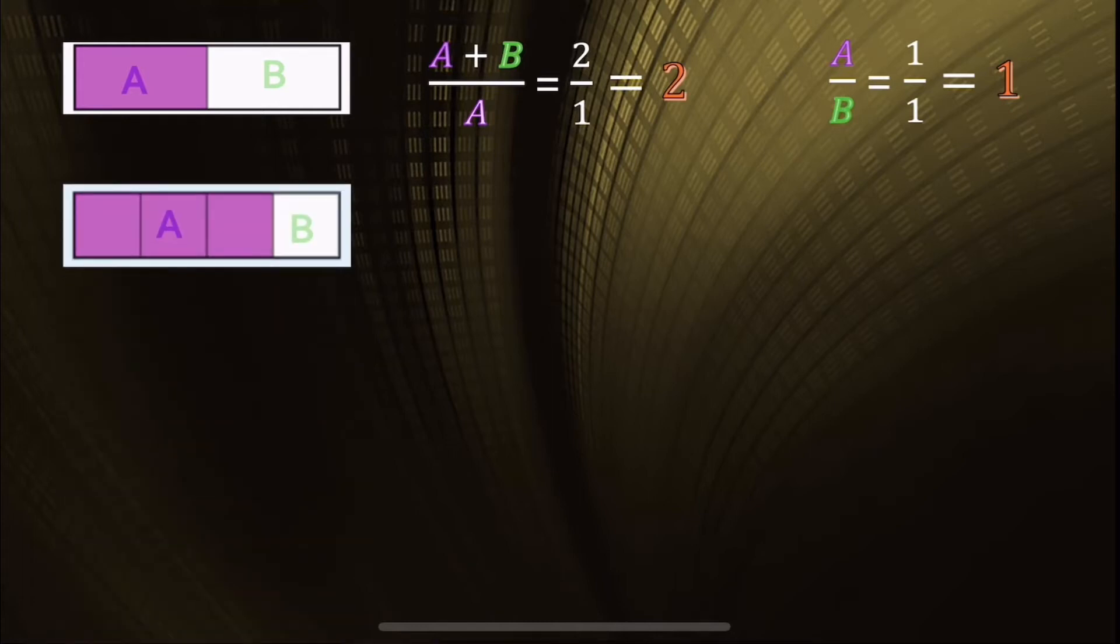Let's cut it 4 to 3. So the ratio of A plus B to A is 4 to 3, and the ratio of A to B is 3 to 1. And keep in mind that we want the two ratios to be equal to each other, so once again, this is not what we were looking for.